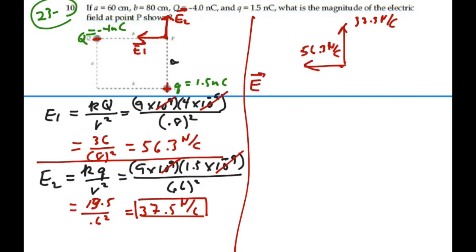So if we wrote this as a combined field, E1 plus E2, it actually would be a negative 56.3i plus 37.5j.